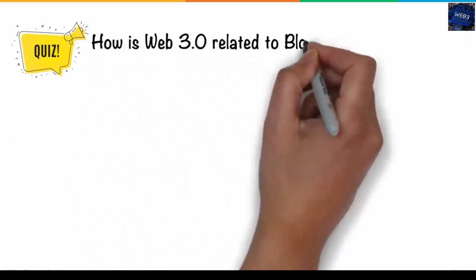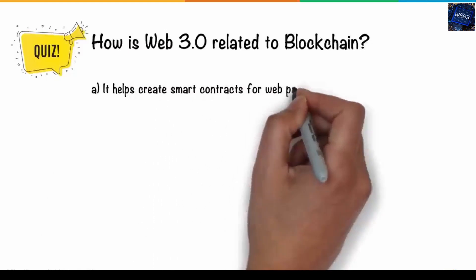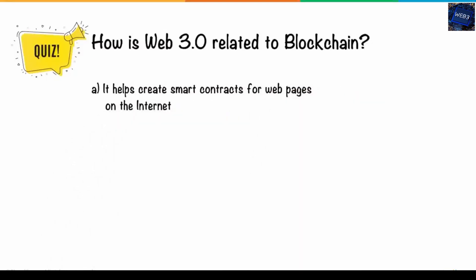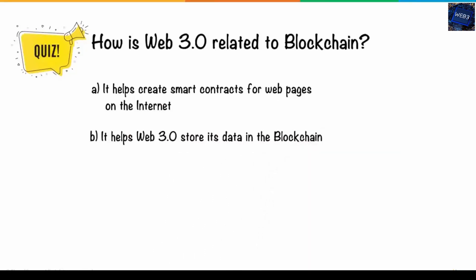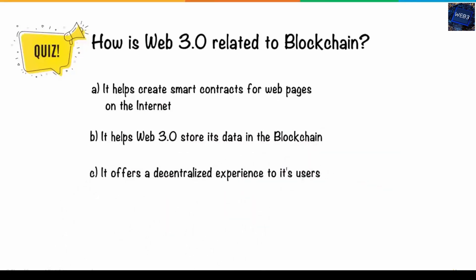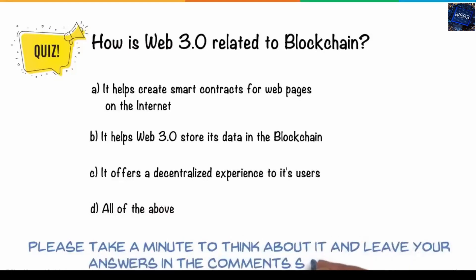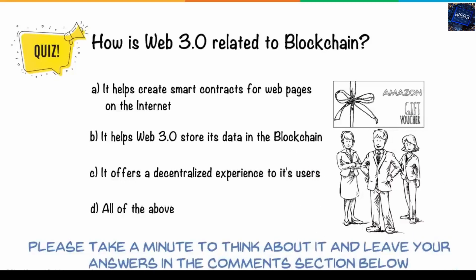How is Web 3.0 related to blockchain? A. It helps create smart contracts for web pages on the internet. B. It helps Web 3.0 storage data in the blockchain. C. It offers a decentralized experience to its users. D. All of the above. Please take a minute to think about it and leave your answers in the comments section below. Three lucky winners will receive Amazon gift vouchers.